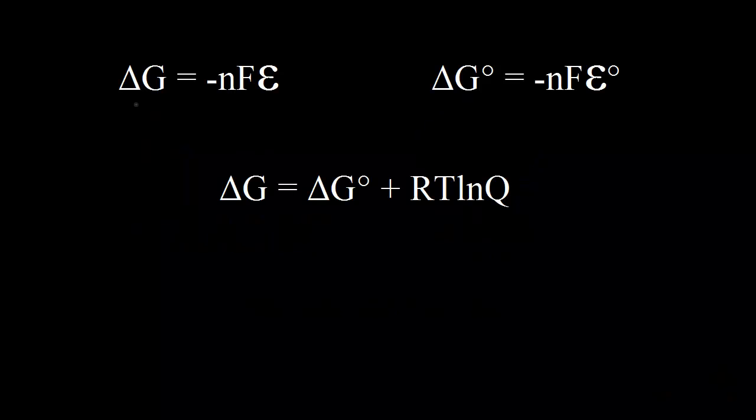We've already seen that the change in free energy, delta G, can be related to the cell potential E by this equation. Under standard state conditions, this would be the standard change in free energy, delta G zero, which is related to the standard cell potential E zero by the same equation.